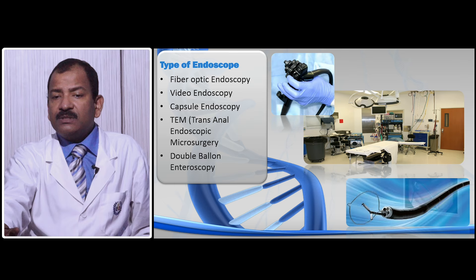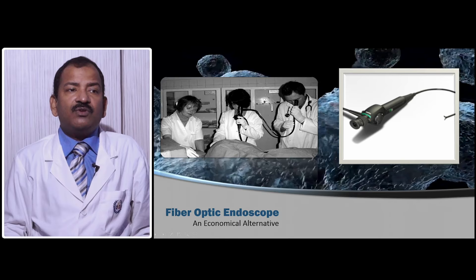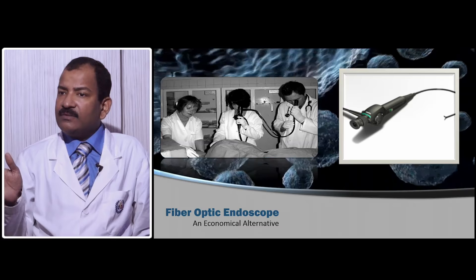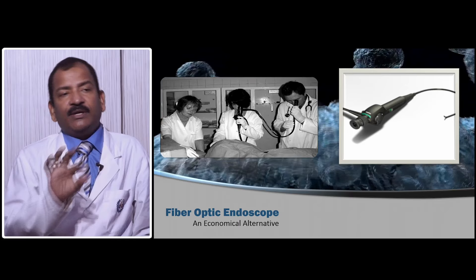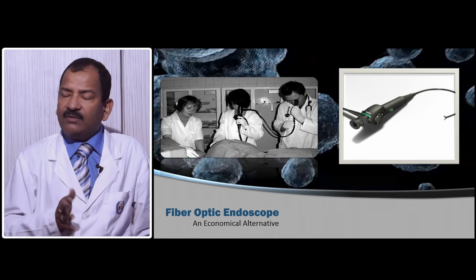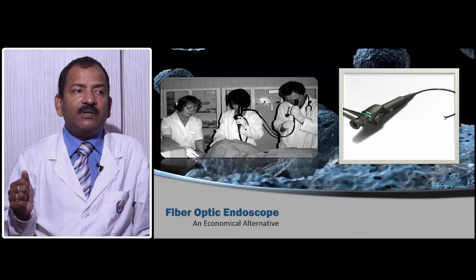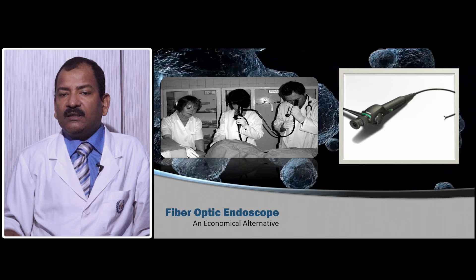Among all those endoscopes, the fiber endoscope was the first invented and it works on the principle of total internal reflection. We know that light cannot travel in a curved pathway; it needs a reflector to change direction. But if any transmitting medium is less than 5 microns in diameter, then light can travel even in a curved pathway due to total internal reflection, because the light will be reflected by the surface itself.